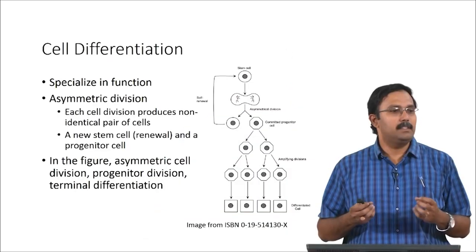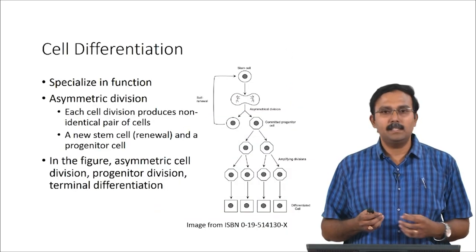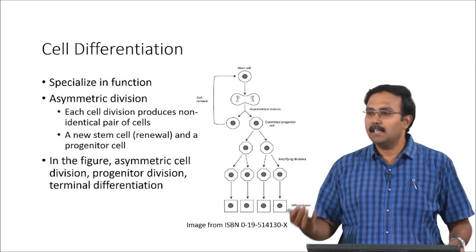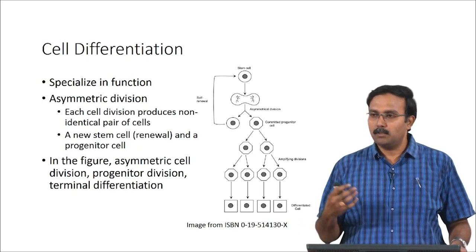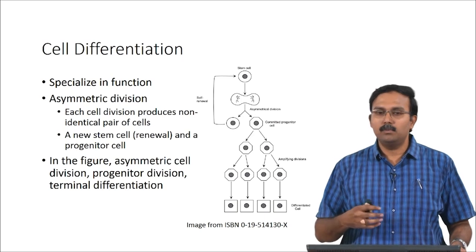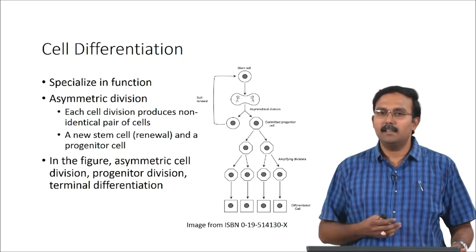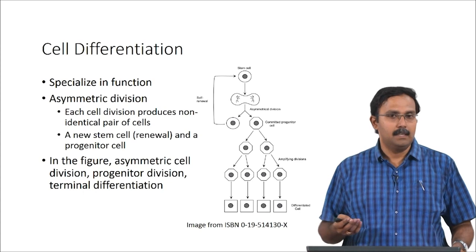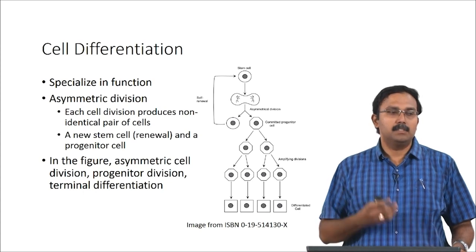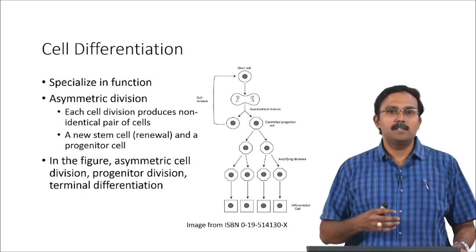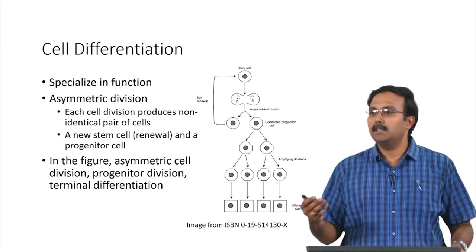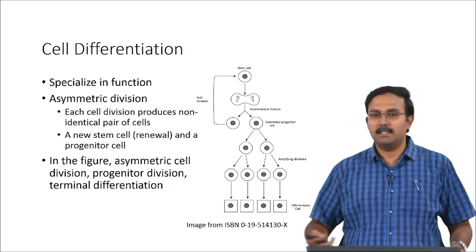We will talk about cell differentiation. Differentiation is basically the process of cells specializing in a function. Stem cells, as you all know, do not have any specialized function — they can mature to form any type of cell. The differentiation is the process which results in the formation of a specific cell type with a desired functionality.